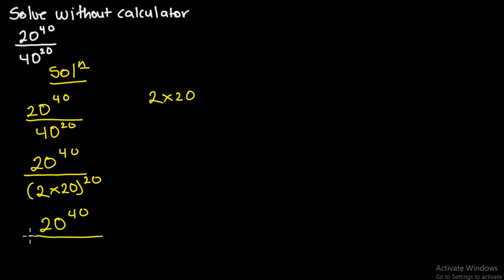Now let us consider this: when we have C over AB, this is the same as writing 1 over A times C over B. And so in this case we are going to bring 2 to the power 20 out just like we did over here.